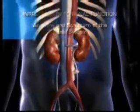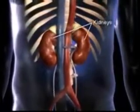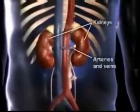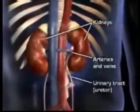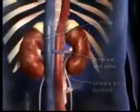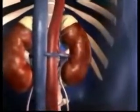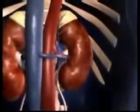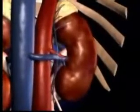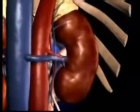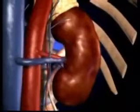The renal system consists of the kidneys, the connecting arteries and veins, and the urinary tract. The kidneys are paired, bean-shaped organs lying outside the peritoneal cavity in the back of the upper abdomen, one on each side of the vertebral column.